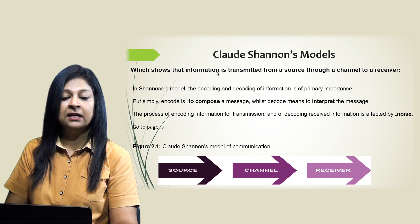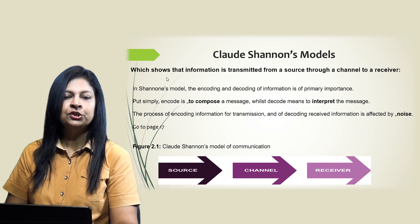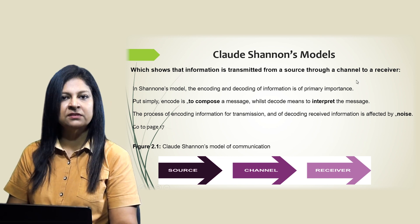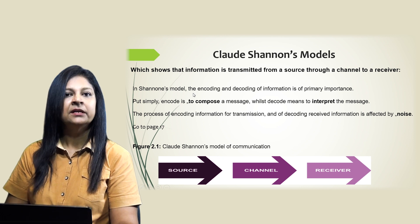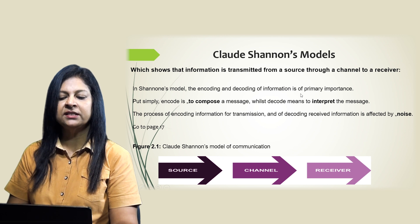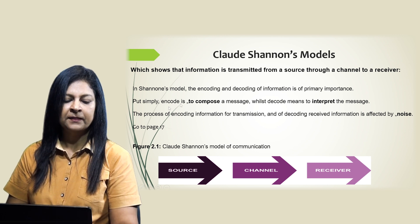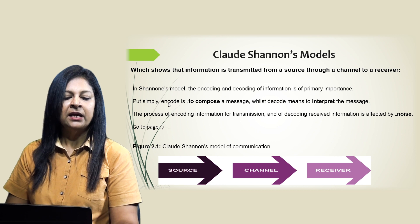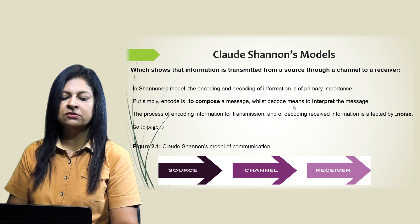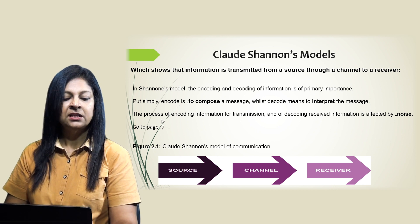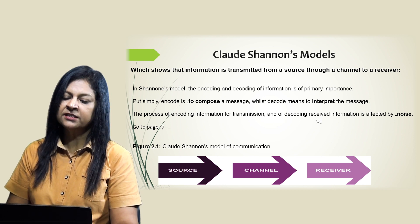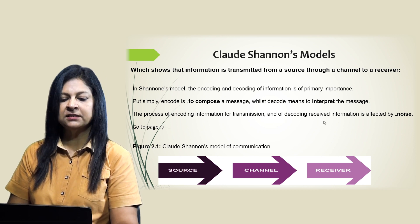Let's take the Channels Model, which shows that information is transmitted from a source, through a channel, to a receiver. In the Channels Model, the encoding and decoding of information is of primary importance. Put simply, encode means to compose the message, while decode means to interpret the message. The process of encoding information for transmission and decoding received information is affected by noise.